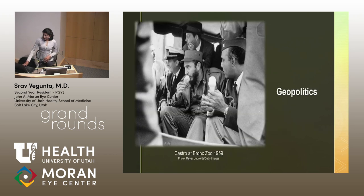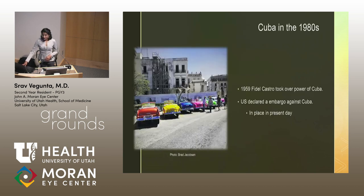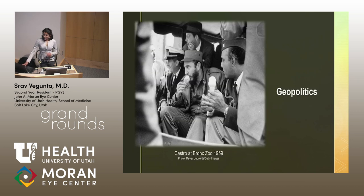This is a great picture of Fidel Castro the same year he took over power in Cuba, 1959. He's eating ice cream at the Bronx Zoo. The background is that he secretly had a child who was going to school in New York at that time, but he was trying to keep it on the DL.